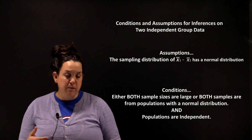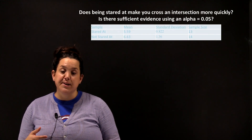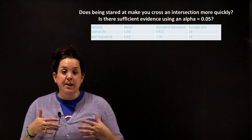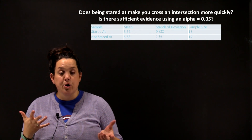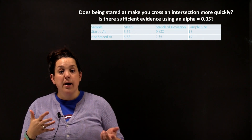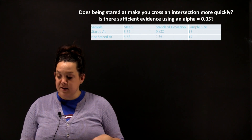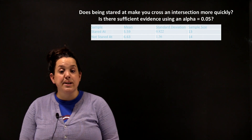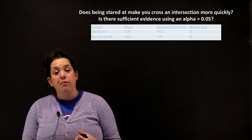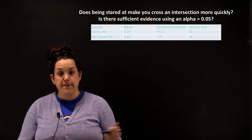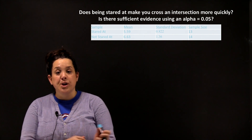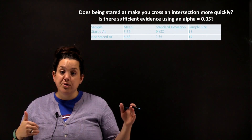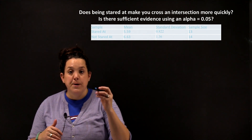Now we're going to look at our first inference, which is trying to decide if crossing an intersection is quickened when you're stared at. We're going to walk through this process using a hypothesis test, and we're going to test using an alpha of 0.05. We want to see if there's sufficient evidence to suggest that being stared at causes you to cross an intersection more quickly.